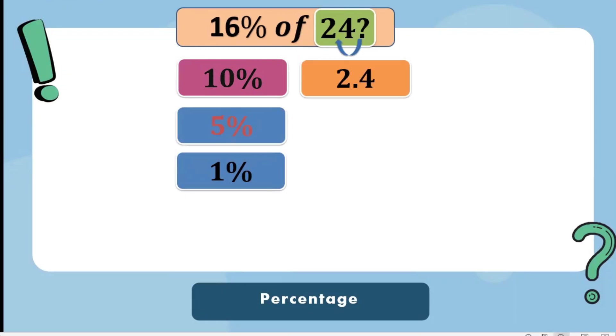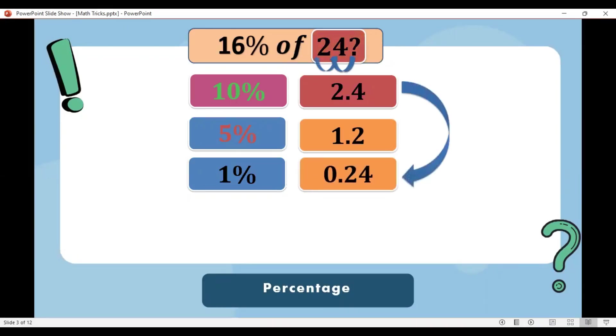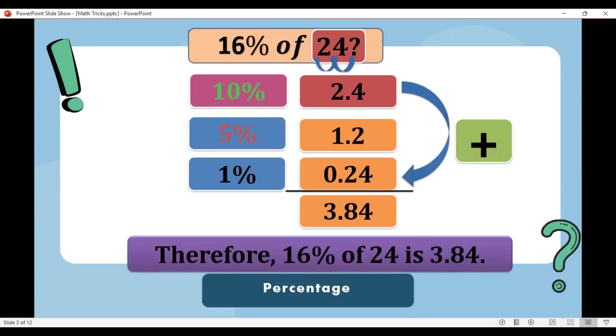5% is half of 10%. So just divide 2.4 by 2, the answer is 1.2. 1% of 24, you will just move two places over, the answer is 0.24. Add all of those together, the answer is 3.84. Therefore, 16% of 24 is 3.84.